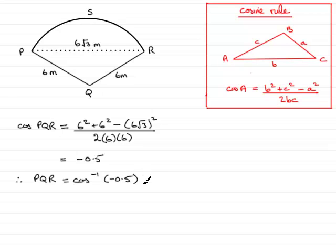We were told to work out the exact angle in radians, which suggests we should give it as a multiple of π. If you have a calculator that gives exact answers, switch to radians mode, and you should find that angle PQR equals 2π/3 radians.